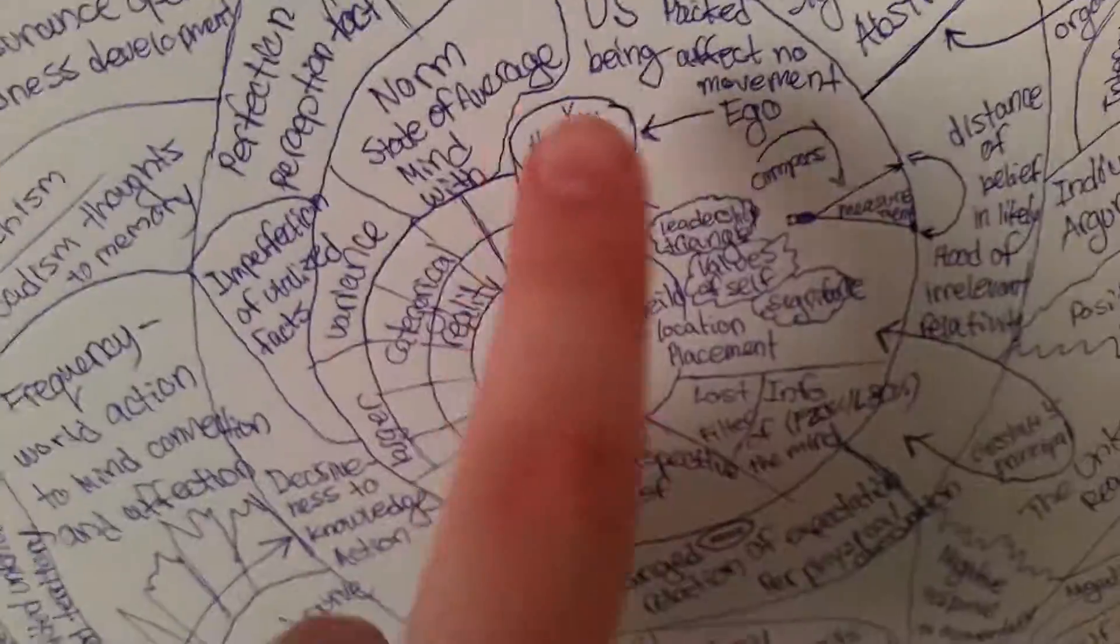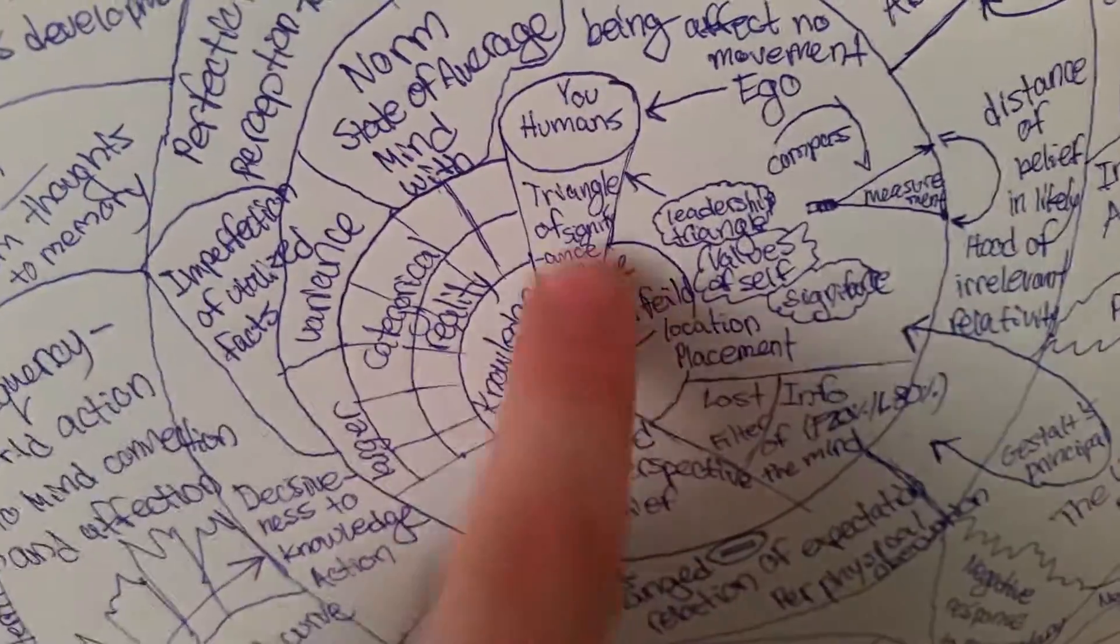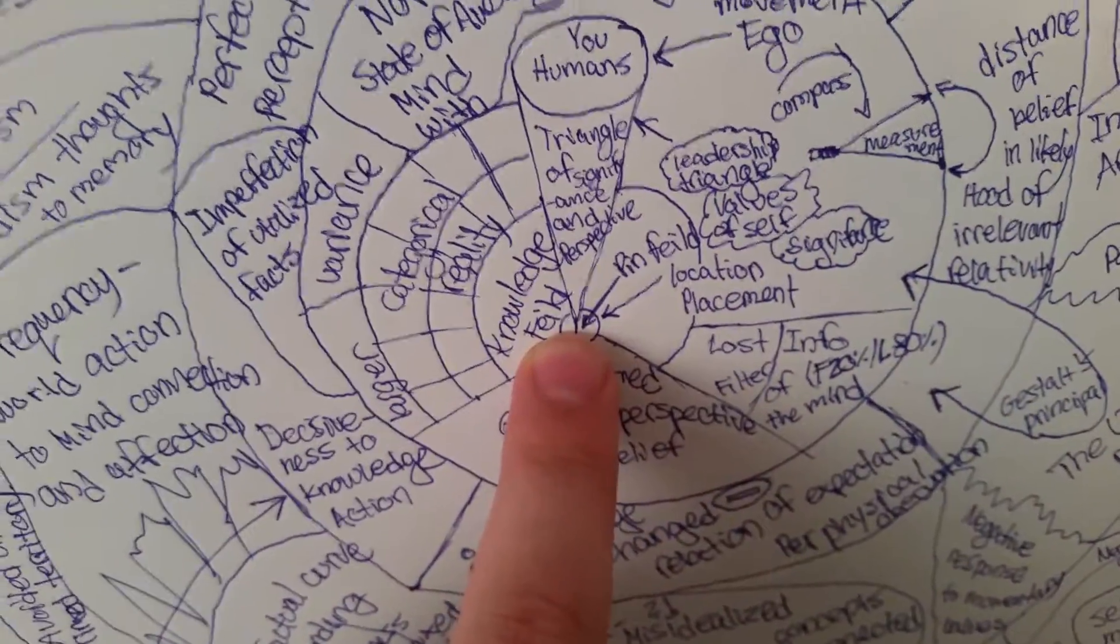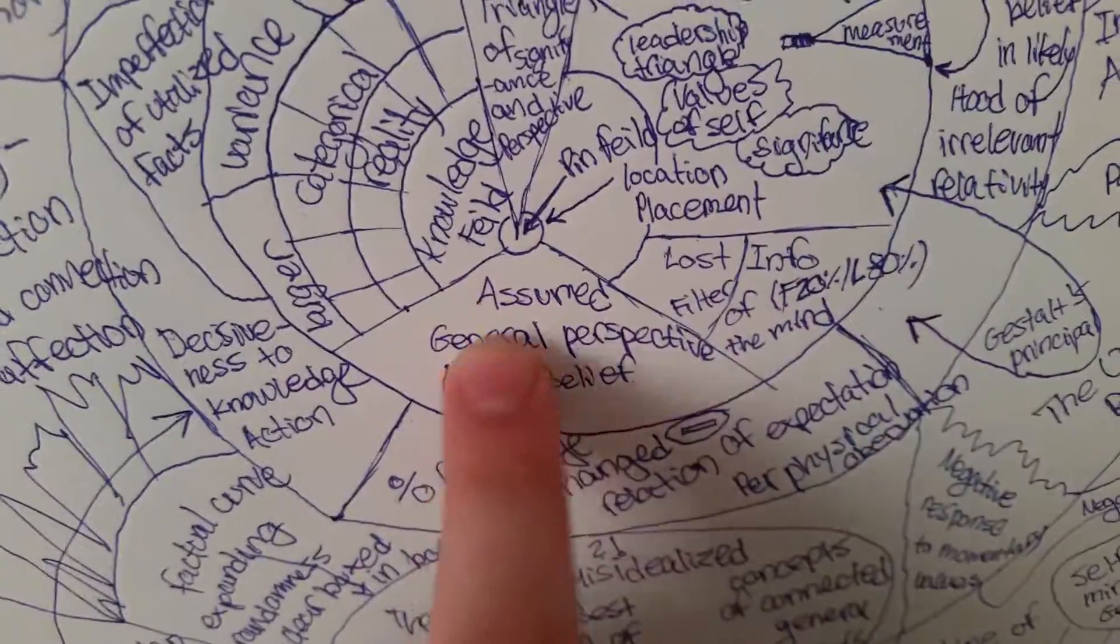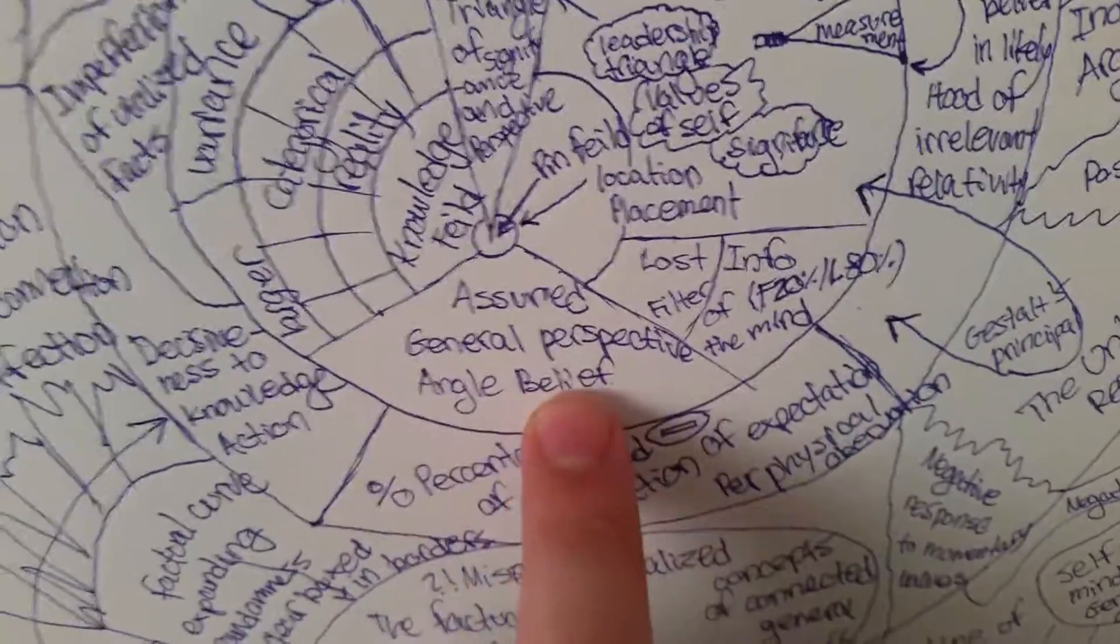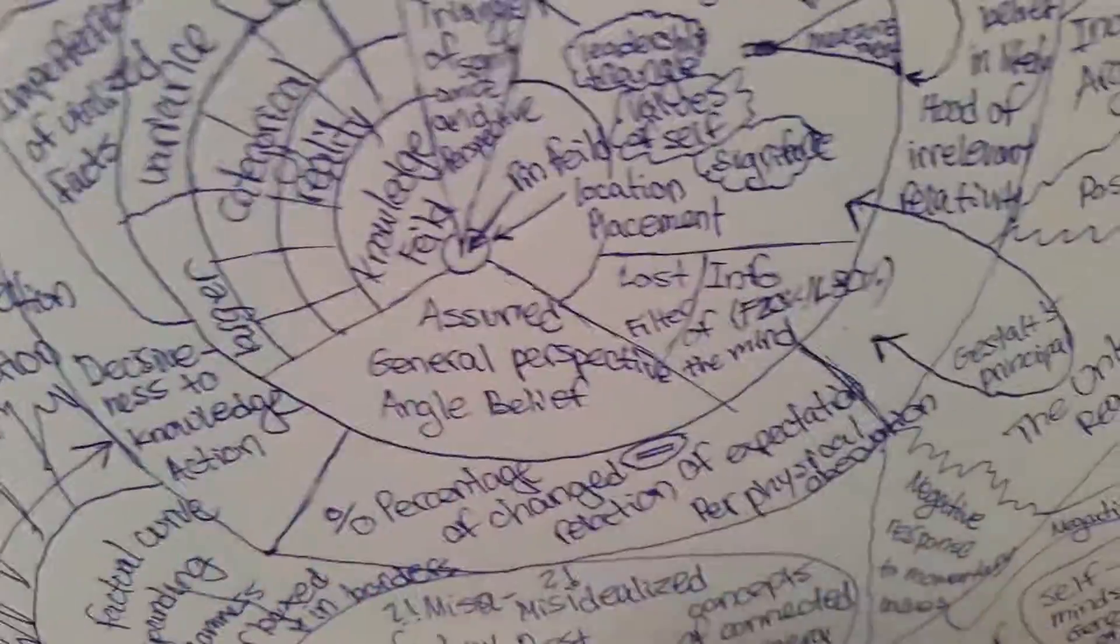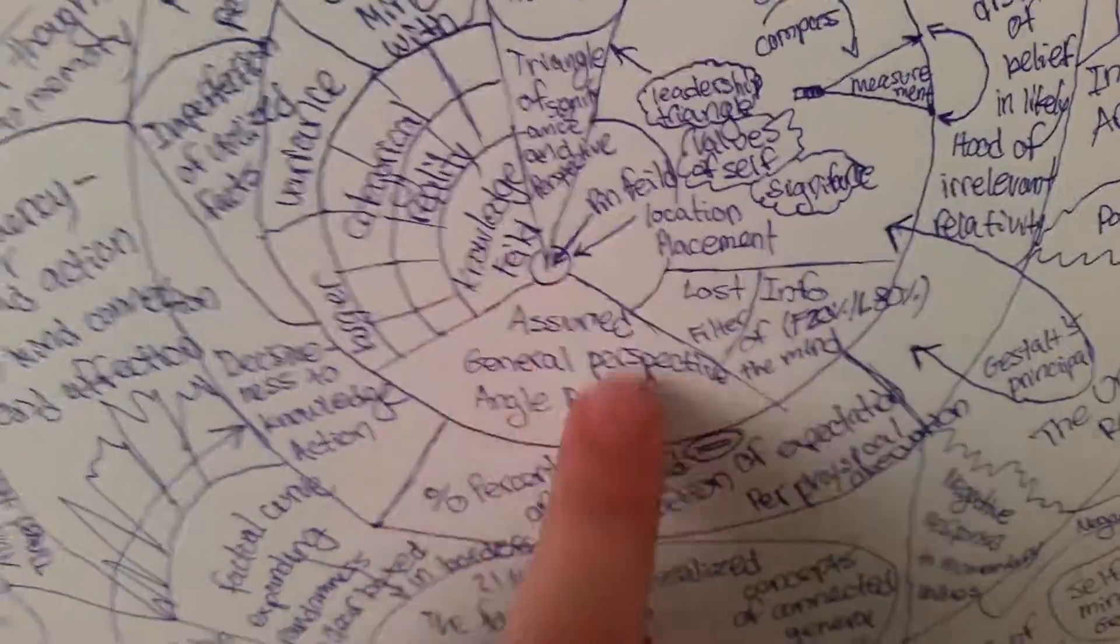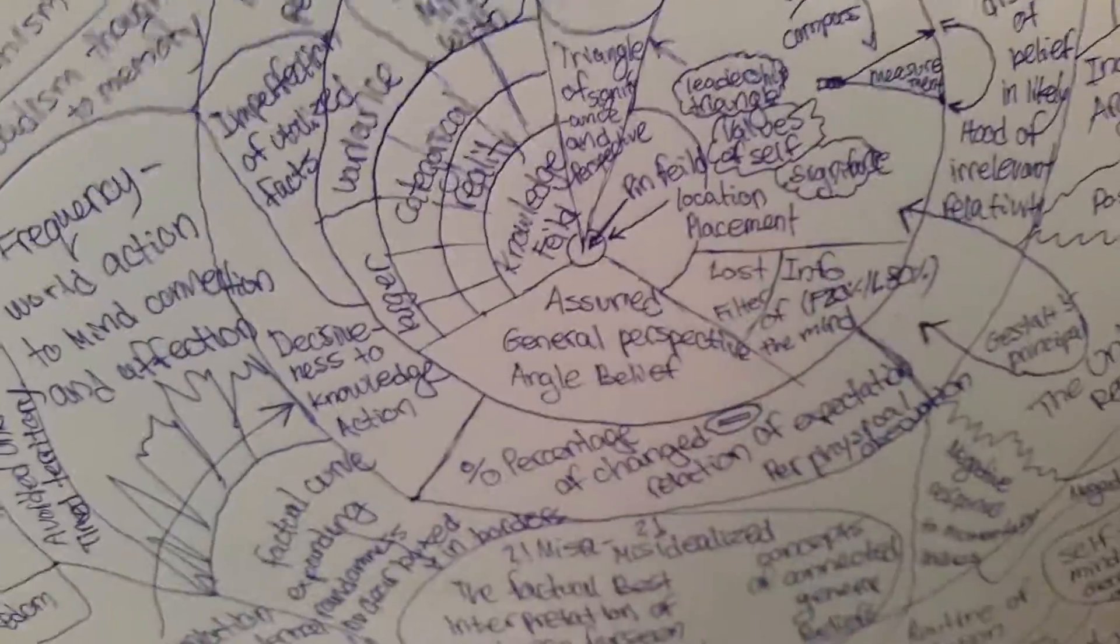Okay, so basically this triangle represents the leadership triangle and it represents your egoism as you are ported into a certain point, which is the location placement of your belief. Now your angular general perspective angle belief, which is basically when you're born, you start ticking and you start doing things that are associated to you gathering different kinds of beliefs.